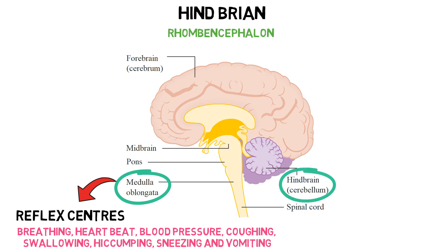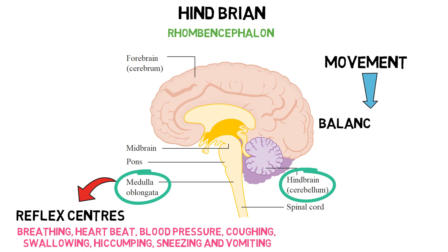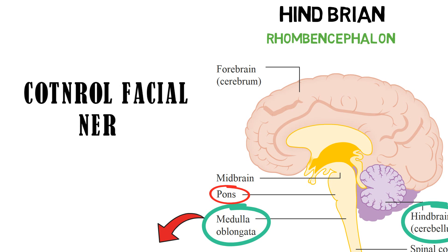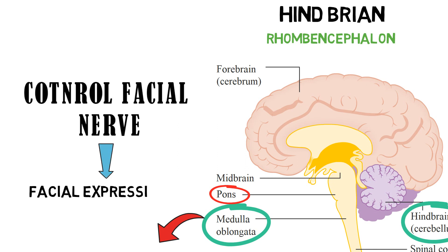The generalized function of the cerebellum is to receive information regarding any movement in progress and to balance the position of the body in space. Pons is located above the medulla oblongata and below the midbrain. The function of pons is to control the facial nerve, which controls facial expression. As part of the brain stem, the pons can also exert some influence on respiratory movement and sleep.